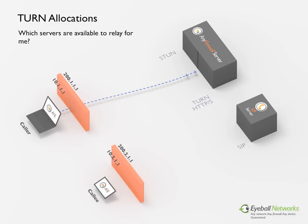So in simpler terms, TURN says: "Sorry caller, you're not allowed to talk to the callee directly because of the symmetric NAT or firewall you're behind. But if you like, I can relay your conversation, because I am allowed to talk to both of you."